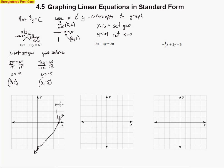Sometimes the x intercept value means something more than just being called the x axis — for instance, if it represents the number of apples or the time it takes to drive a certain distance. The same applies to the y intercept: in a real-world situation it might represent the distance from home or how many bananas we bought. We'll want to find that value and then interpret it — we'll see that in an example coming up.